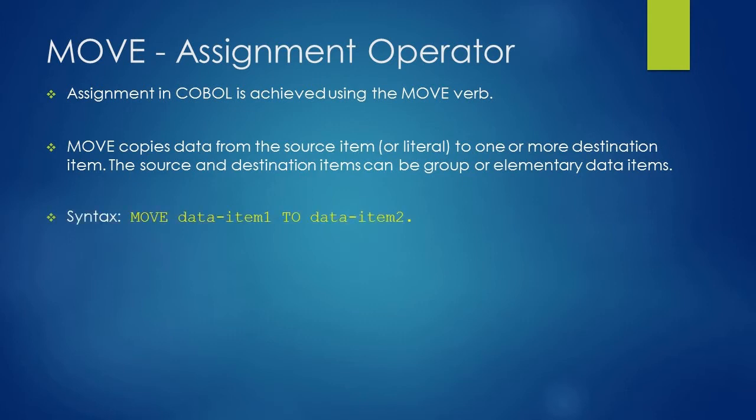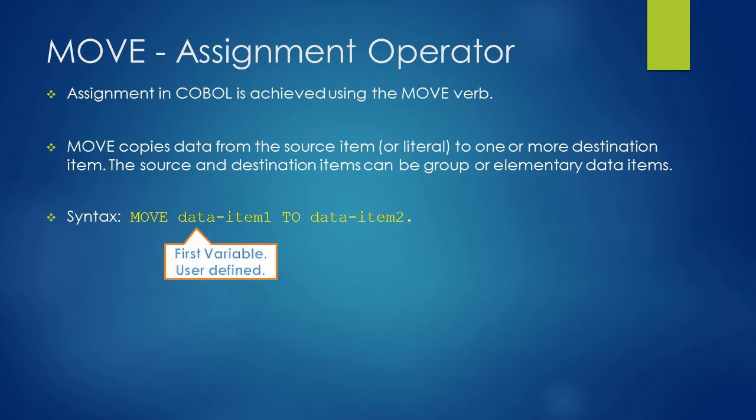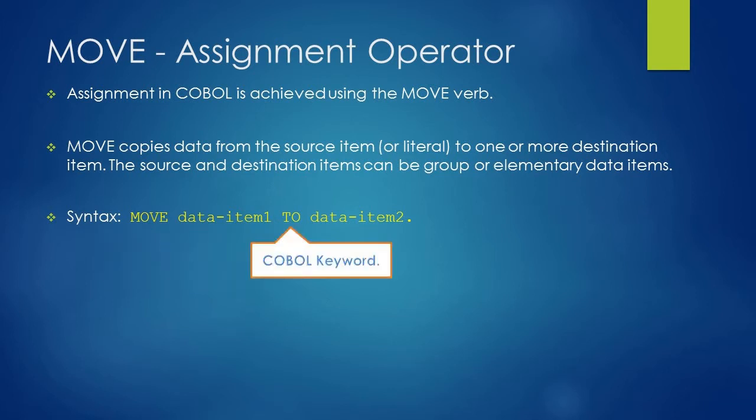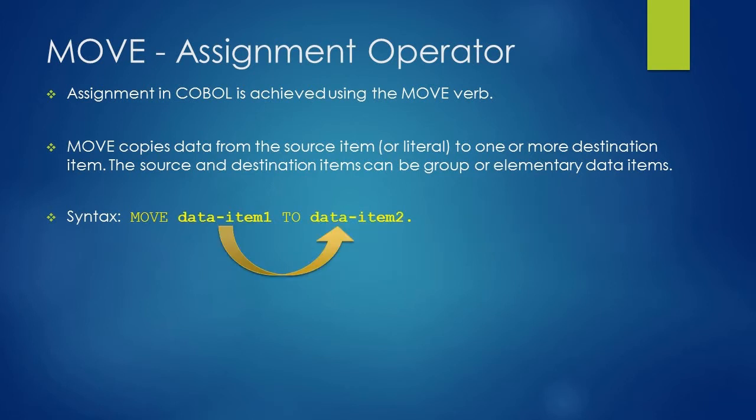Here is the syntax of the MOVE verb. You start writing with the MOVE word, followed by the first variable, followed by the TO word, followed by the second variable and a period. Here the value of the first variable, that is data-item-1, will be moved to the data-item-2 variable.